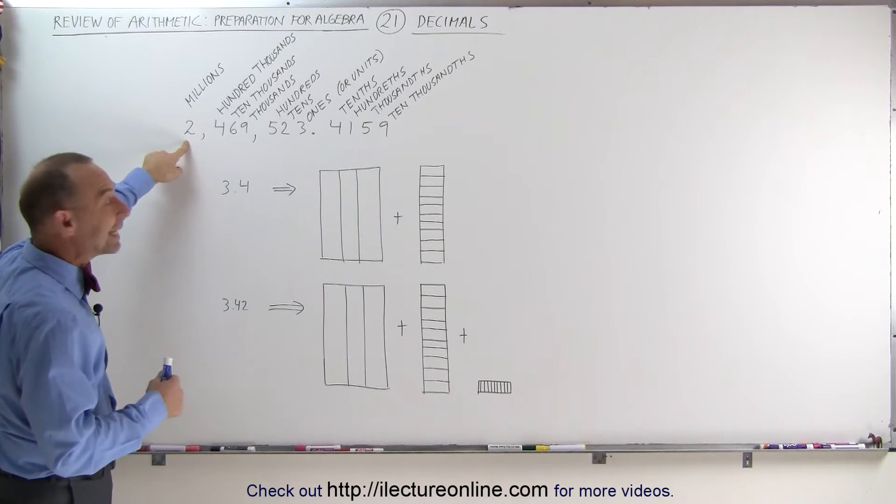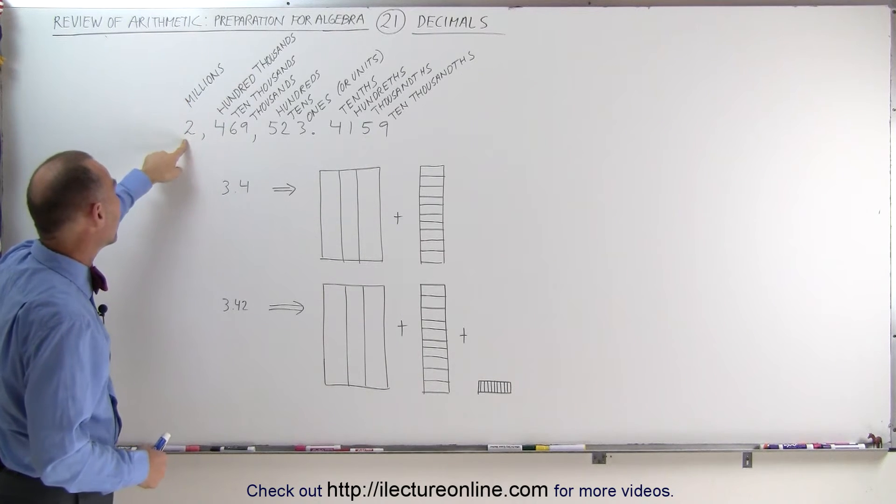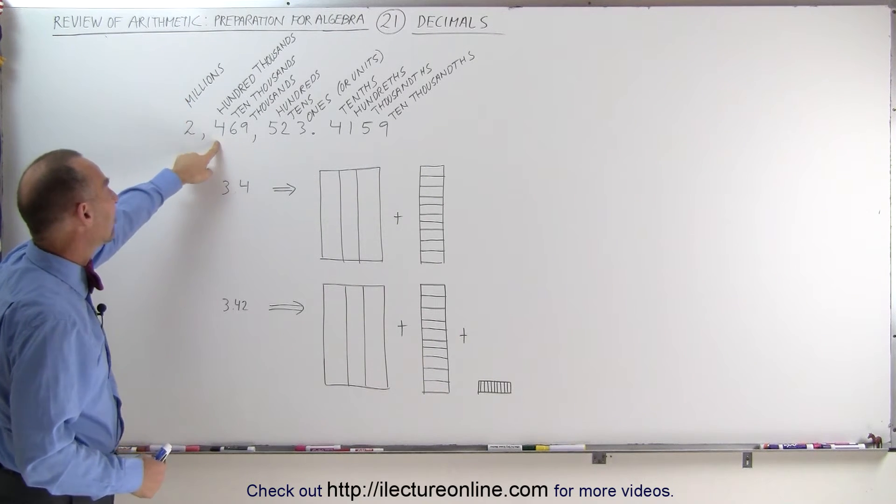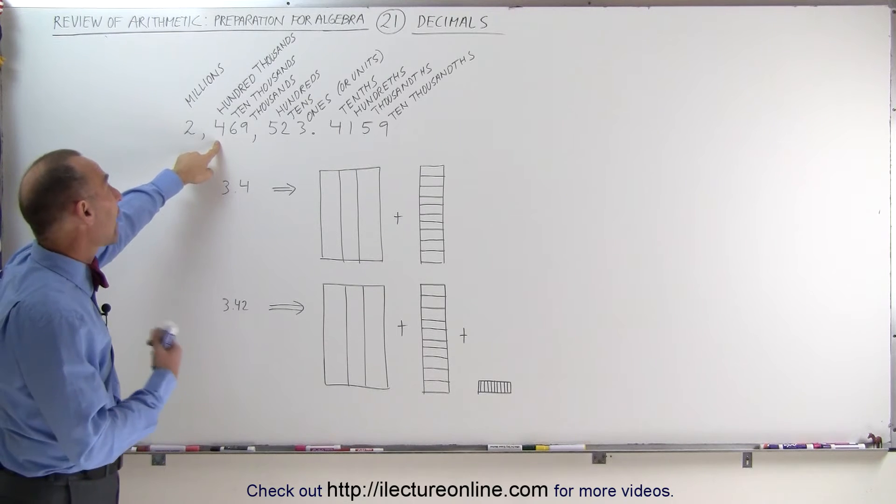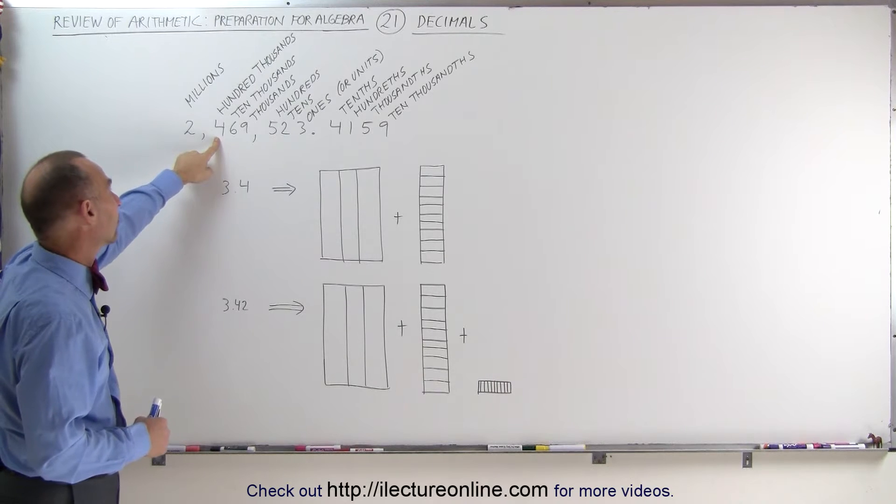The first number here indicates how many millions you have, so the numbers are called millions. Two of them, so we have two million. This number represents how many hundred thousands you have. You have 4 of them, so this is 4 times 100,000, or 400,000.